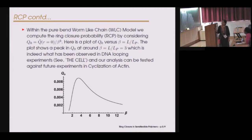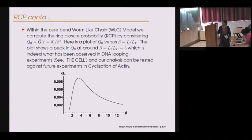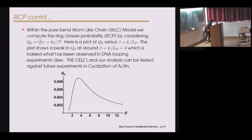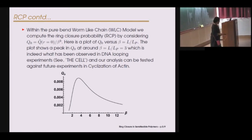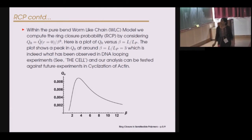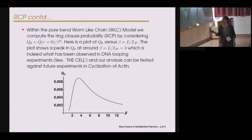Here is a plot of Q₀ versus beta, which is the scaled contour length. The thing to notice is that the ring closure probability gets suppressed for both the rigid end and the flexible end, and it peaks around the intermediate range of rigidity for which beta is approximately around three. This would correspond to a configuration like an equilateral triangle where each edge is like the persistence length. This quantitatively matches with DNA experiments with fluorophores and quenchers. This intermediate range of flexibility being picked up is a sign of an optimal competition between energetic and entropy effects.